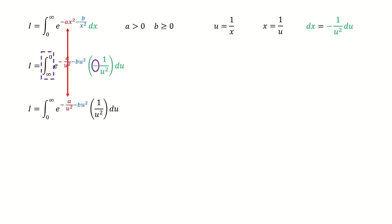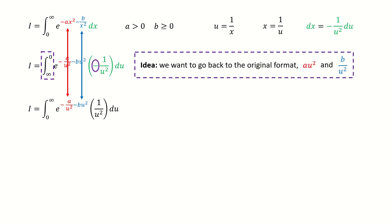If you compare this red term, previously it's a times x squared, but right now it's a over u squared. And similarly for this blue term, it's flipped from b over x squared to b times u squared. So our goal is to go back to the original format. We want this red term to be a times u squared and this blue term to be b over u squared. So we make another substitution: we let u equal to square root of a over square root of b, then times t.